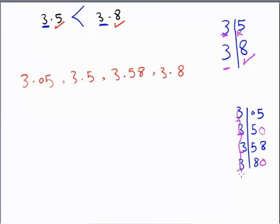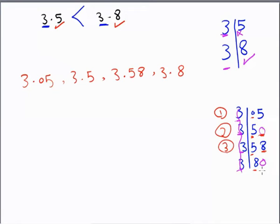So I add zero here and zero here to equalize digits. Now comparing: I have 3, 3, 3, 3 — all equal. Then 0, 5, 5, 8 — the smallest is 0. Then I have 5 and 5, but here 0 and here 8, so this is the next smallest, then 3.58, and the largest is 3.8.